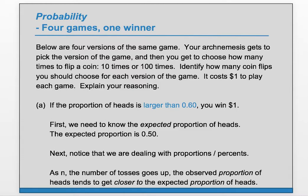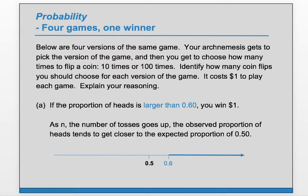If you toss a coin 10 times, to get larger than 60% heads you would need 6 or more heads — that doesn't seem that unlikely. But if you do it 10 million times, to get 60% or more heads you would need 6 million or more tosses. That's a whole million away from the expected value of 5 million, so that seems unlikely. As n goes up, we expect the observed proportion to be closer to the expected proportion. So we want a smaller number of tosses — we will choose 10.